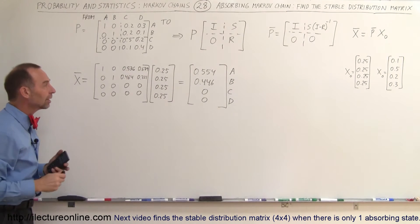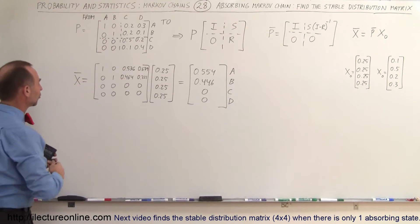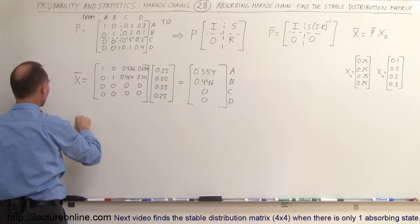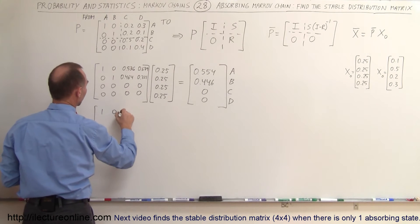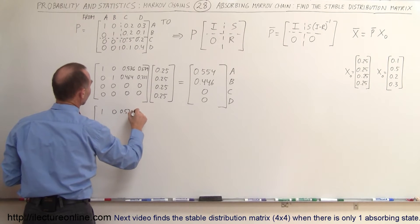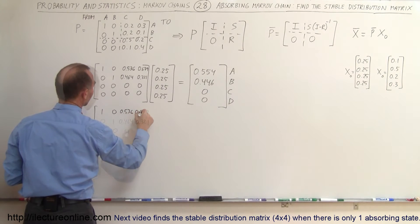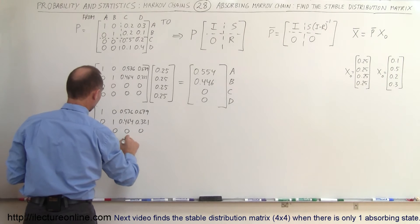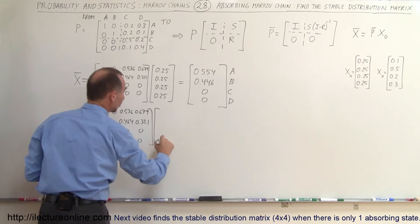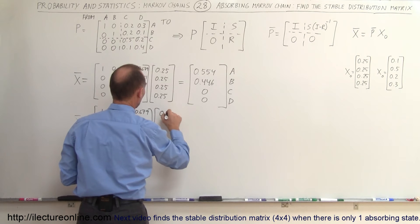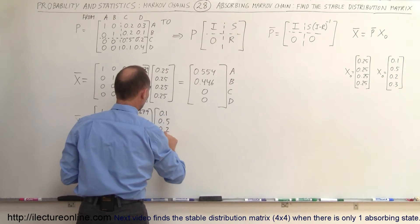Now what will it look like when we have a different initial distribution? The stable distribution matrix equals the stable transition matrix — with entries 1, 0, 0.536, 0.679, 0, 0.464, 0.321, 0, 0 — multiplied by the new initial distribution matrix: 0.1, 0.5, 0.2, and 0.3.